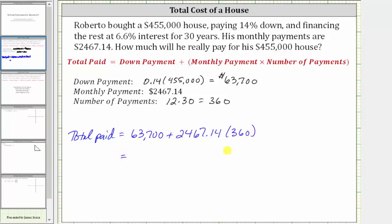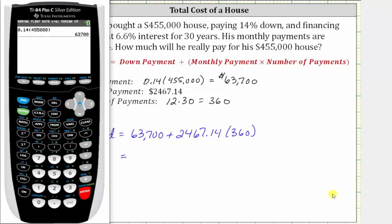Going back to the calculator one more time, the total amount paid for the home is $951,870.40.